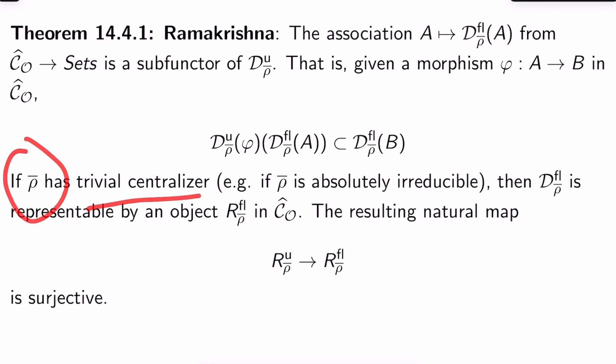Now, if ρ̄ has trivial centralizer, and I'll emphasize, this is the case if ρ̄ is absolutely irreducible, this happens. But this is more general than that. Now most of the time this is applied, ρ̄ will be absolutely irreducible, but why not prove the strongest result you can?